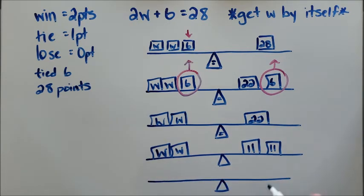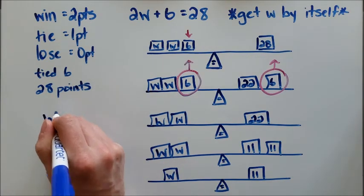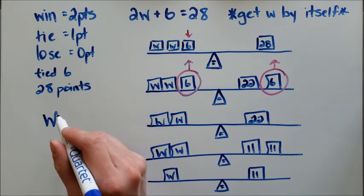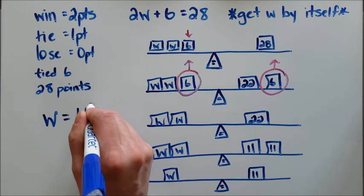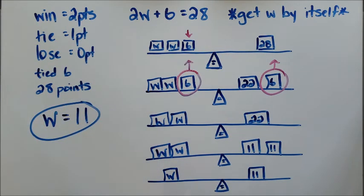that one box of 11 is equal to one box of W. And so I can then say that my answer is that the Midland Tornadoes won 11 games.